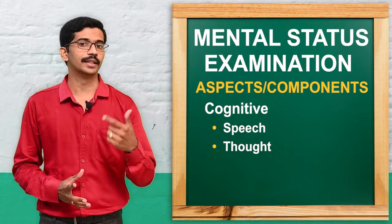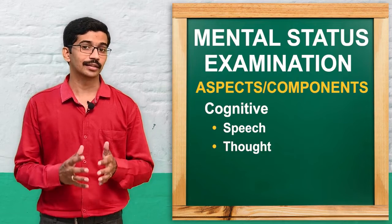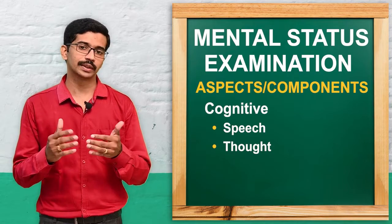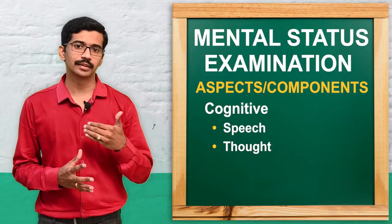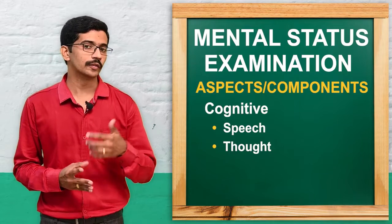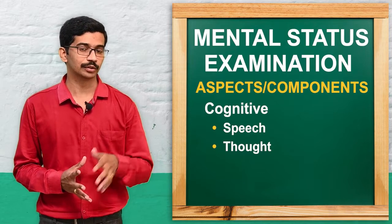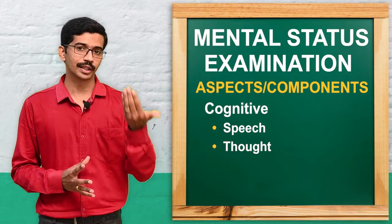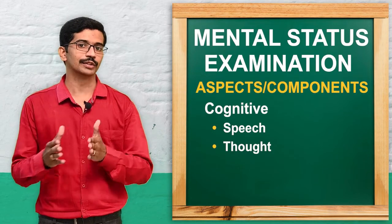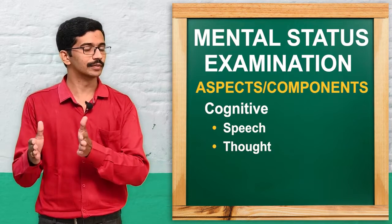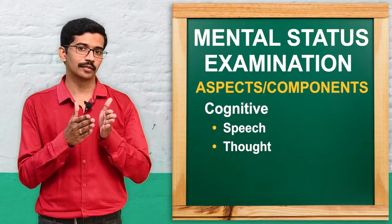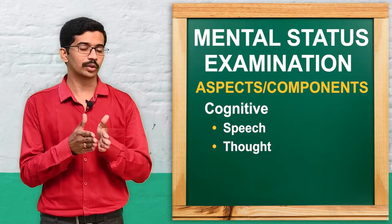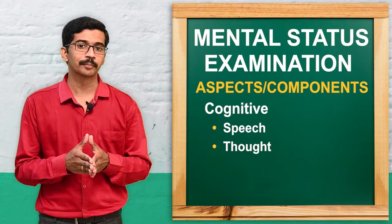Moving to the third and important component — the cognitive aspect — these are the higher mental activities of a person. We start with speech and thought. In speech, we assess the rate, volume, tone, and flow. We observe how the patient initiates speech — voluntarily, spontaneously, or only in response to questions — and whether volume and tone are increased or reduced. In terms of flow, sometimes a patient starts with one topic and ends with another, which we call tangentiality. Sometimes they shift between topics while trying to connect them, called flight of ideas. Sometimes they jump from one topic to another without connection, called loosening of association. We also observe for coherence.